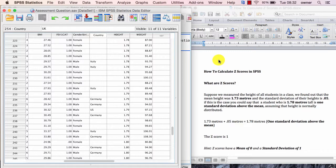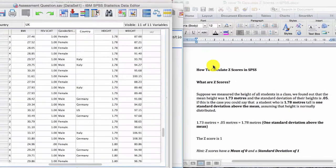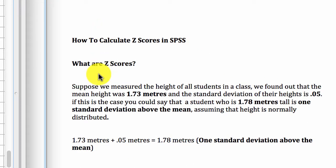First, what are Z scores? Let's look at this simple example. Suppose we measure the height of all students in a class. We found out that the mean height was 1.73 meters and the standard deviation of their height is 0.05. If you remember from the previous lecture, the mean height is the average height of all the participants and the standard deviation is how much on average their height deviates from the mean.